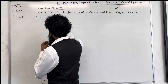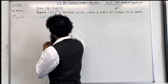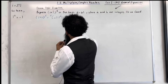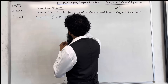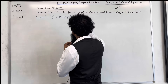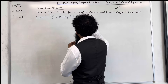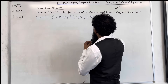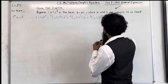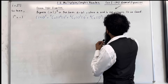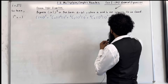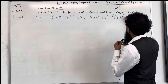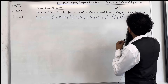I've got 6 choose 0 times 1 to the power 6 times i to the power 0, plus 6 choose 1 times 1 to the power 5 times i to the power 1, plus 6 choose 2 times 1 to the power 4 times i to the power 2, plus 6 choose 3 times 1 to the power 3 times i to the power 3.